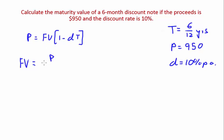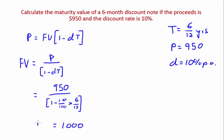Well, you divide both sides by one minus dt, as said in a previous video. So your future value equals your principal on one minus dt close bracket. Let's substitute that in: 950 on bracket one minus 10% multiplied by six on twelve.